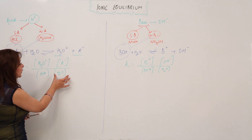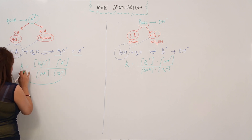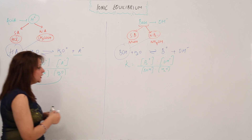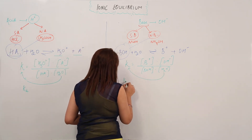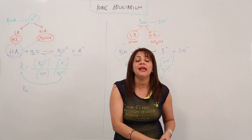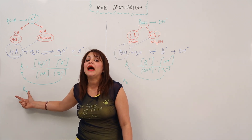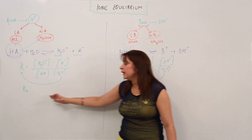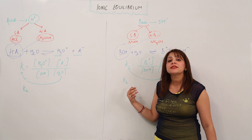We know that water is present in excess, so the concentration of water multiplied with the equilibrium constant K gives rise to Ka. Similarly, the concentration of water multiplied by K gives us Kb. Ka is the ionization constant for an acid, and Kb is the ionization constant for the base. The subscript A indicates acid and B indicates base.